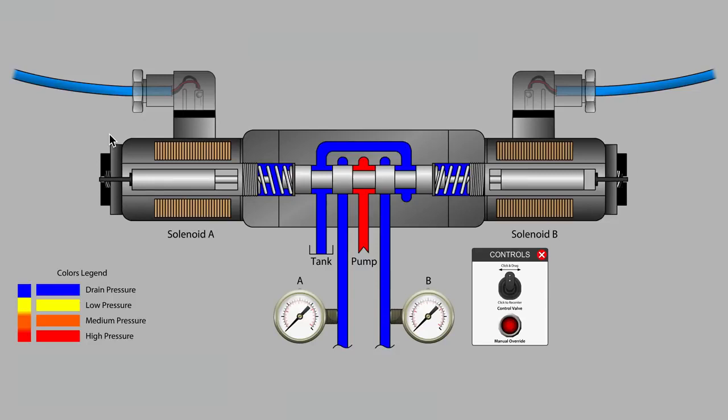In this video, we will look at how the electrical solenoids operate a basic spool-type directional control valve, and we'll look at the mechanical override feature that lets you test for basic functioning of the valve.